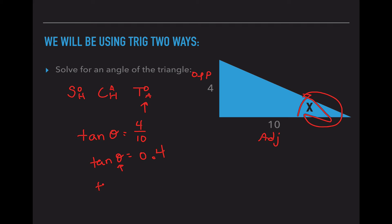So in order to rearrange this, we actually have to take the inverse of both sides. So these tangents end up crossing out and we're left with theta equals tan to the minus 1 of 0.54. So when we calculate that out, theta is 21.8 degrees.